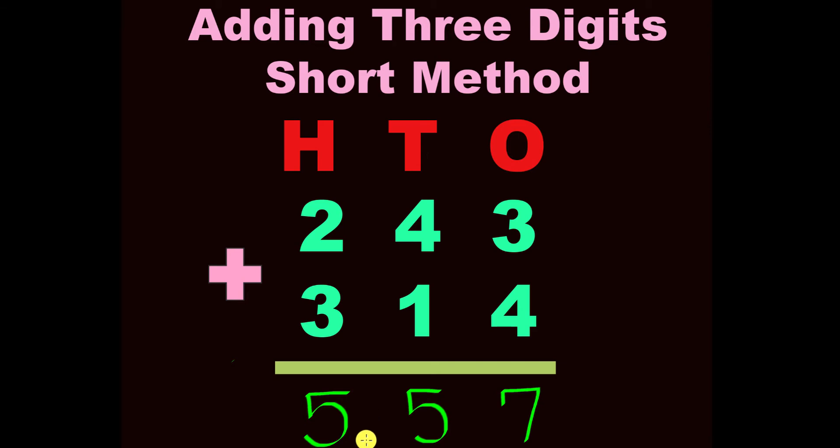There is no and word in numbers. So you would read this as five hundred fifty-seven. Please do not say five hundred and fifty-seven. It is five hundred fifty-seven.